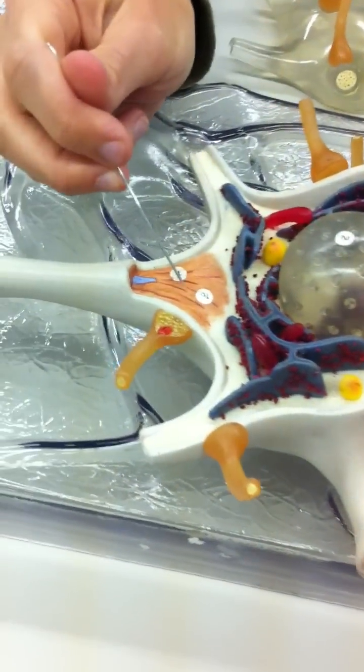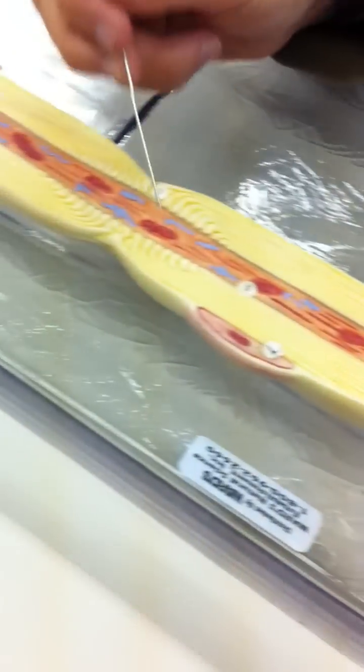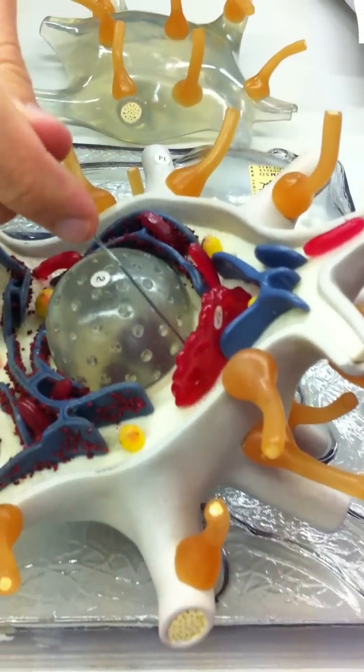Neurofibrils, if you look closely, you can see these lines here. These are your neurofibrils. They extend throughout the axon. And then this right here is your Golgi apparatus.